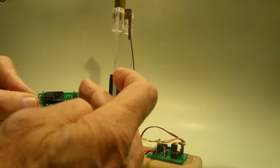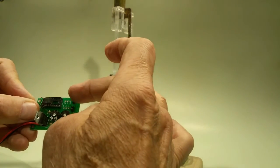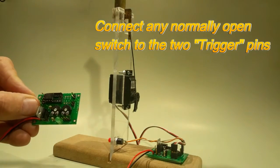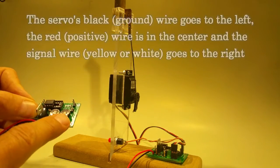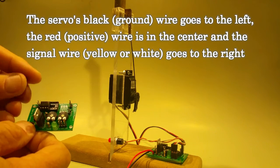There is a trigger button over here which you would use to connect to a reed switch or to a push button to start everything. The servo itself connects down here to these three pins and over here is a jumper.